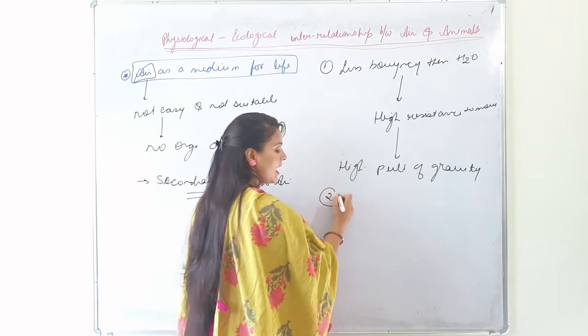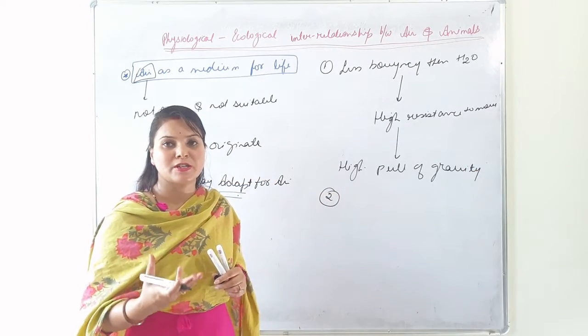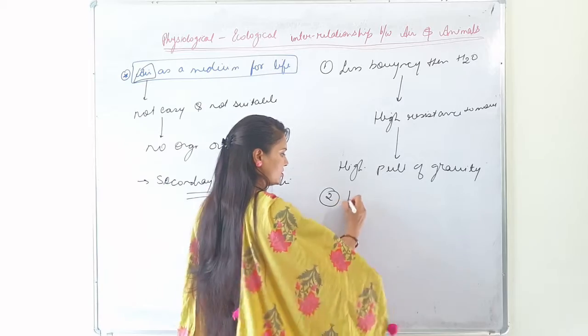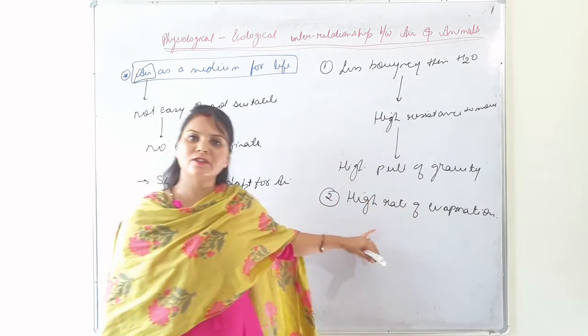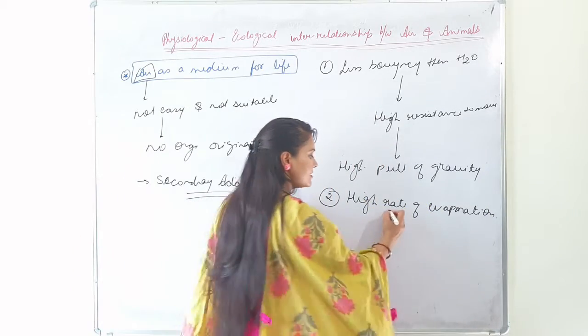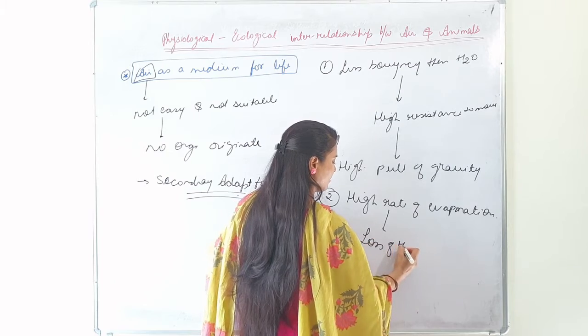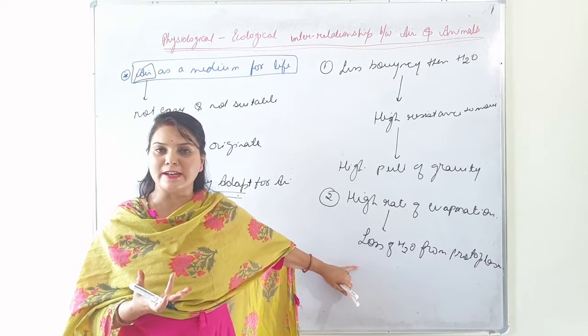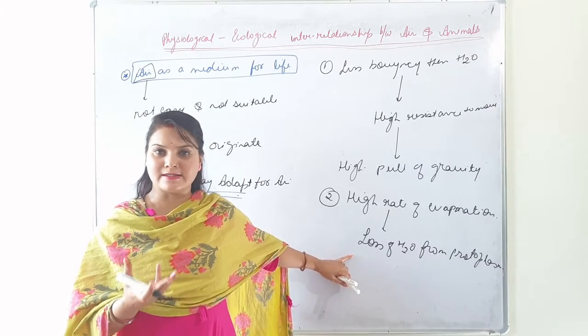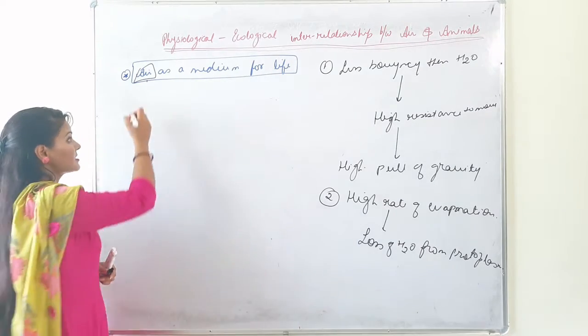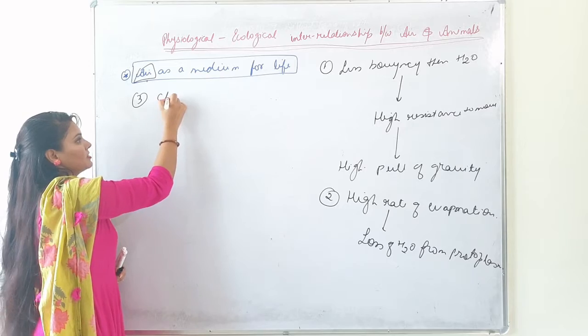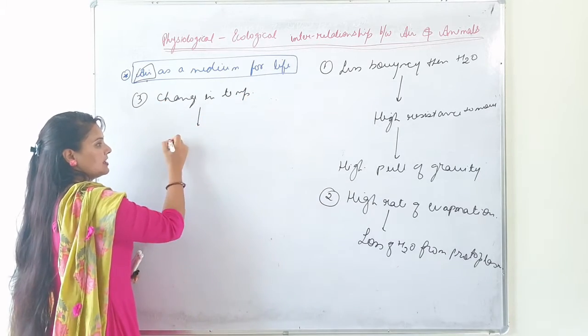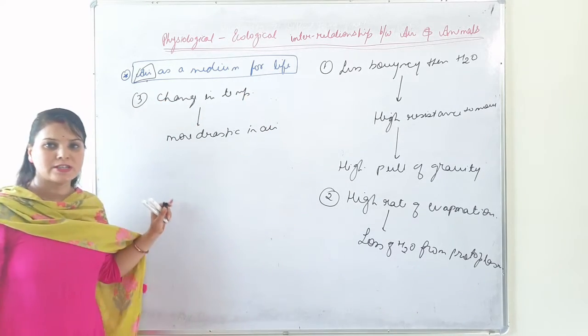In air, animals are also subjected to high rate of evaporation. Due to the high rate of evaporation, there is loss of water from protoplasts and this leads to the death of an organism due to the loss of excess amount of water.